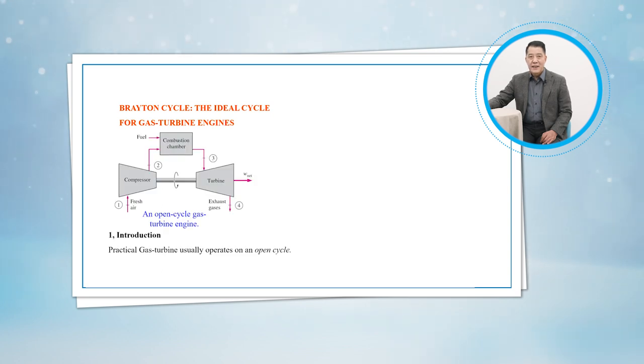Firstly, let's have a brief introduction for the gas turbine. Gas turbines usually operate on an open cycle, as shown in Figure 1027. Fresh air and ambient conditions is drawn into the compressor, where its temperature and pressure are raised.